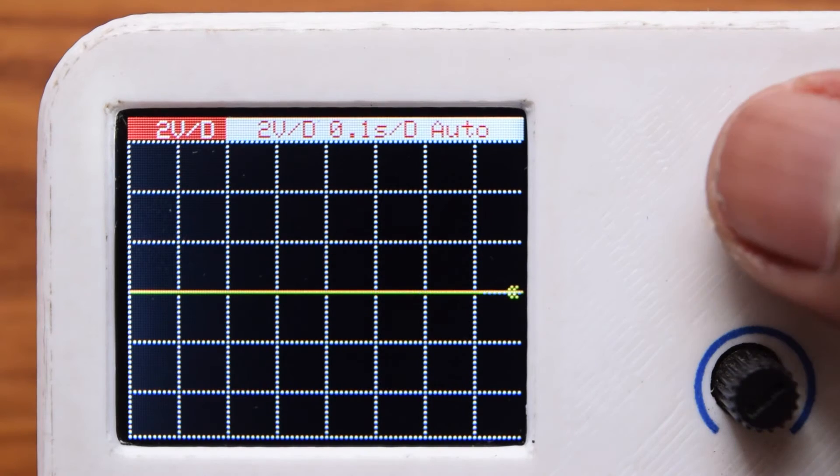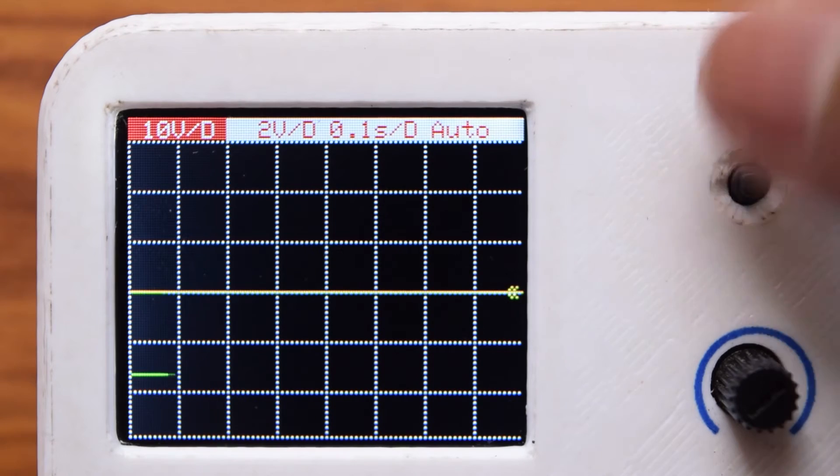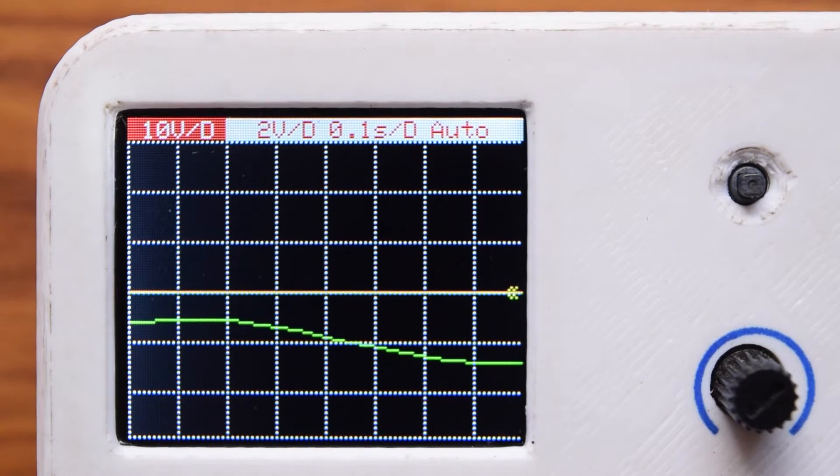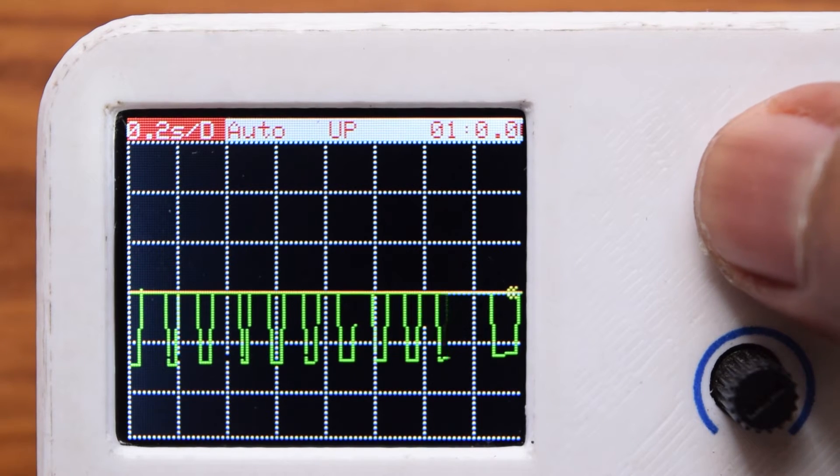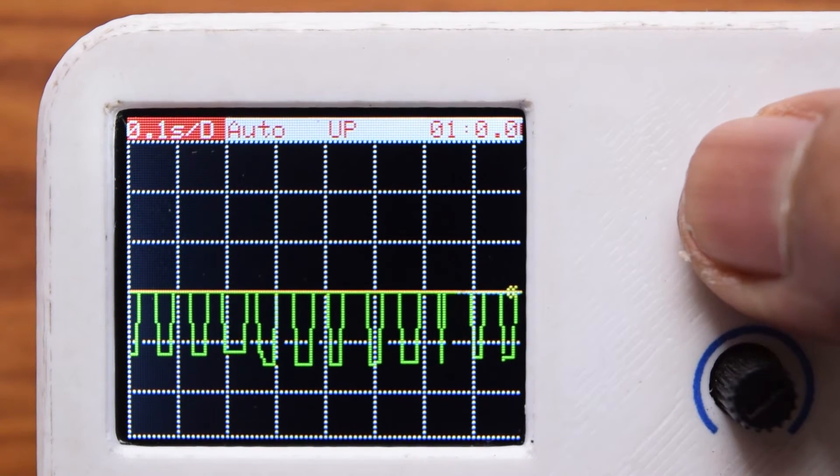You can change the volts per unit division to scale your plot according to your signal. The least count possible is one millivolt. You can also scale the time division with a least count of 125 microseconds to get better resolution.